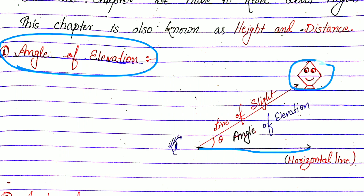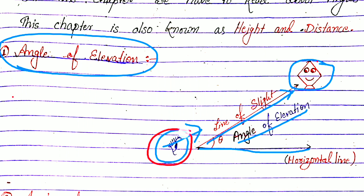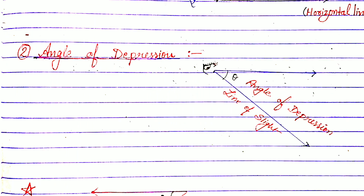Suppose a kite is flying in the sky, and a human being is seeing it from below. The line of sight it will make, and the angle of elevation will occur there. So whenever a person is seeing from downward to an upper object, the angle of elevation will occur.